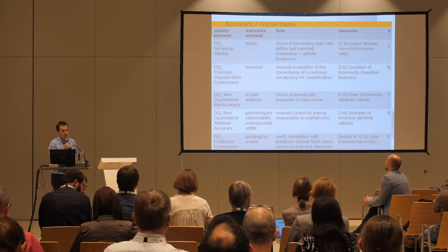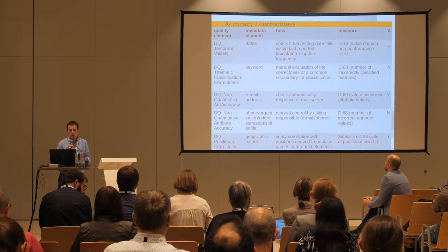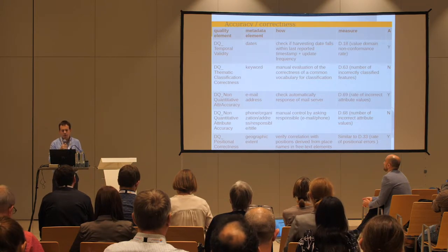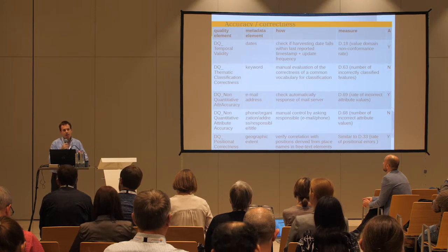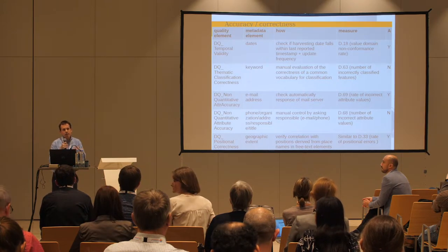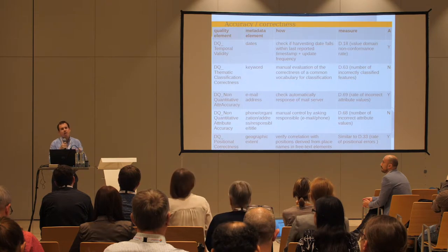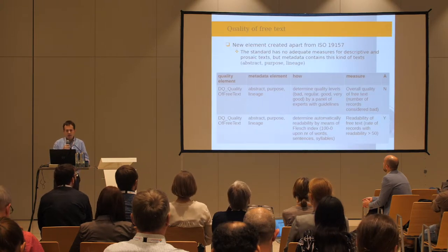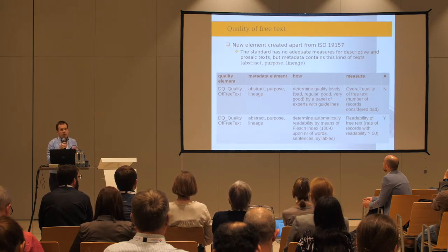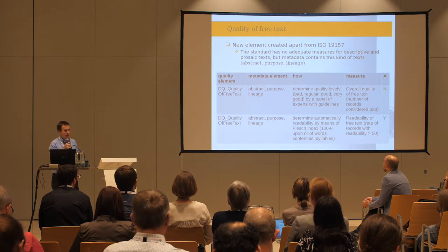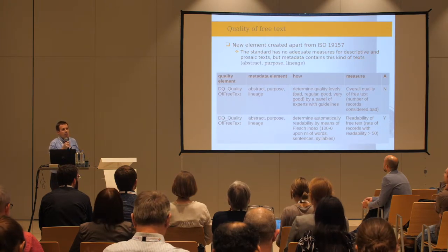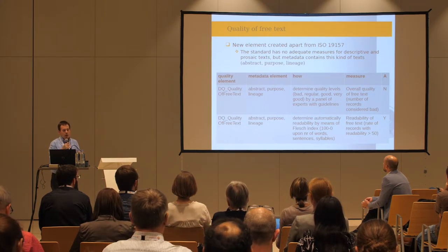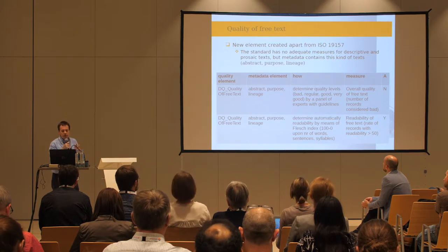We also check if the telephone number and name of the organization are currently correct by asking those responsible for the datasets. We also check if the geographic extent is correct in the sense that place names in metadata really refer to that geographic extent. Additionally, we have a special quality element for free text, since metadata includes prose text and we should check its quality. We have two measures for this.